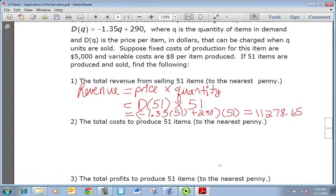We want to find the total cost to produce 51 items. They tell us that the fixed costs are $5,000 and the variable costs are $8 per item, so it's going to be 8 times 51 plus 5,000, and that's going to be $5,408.